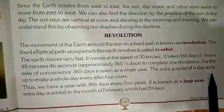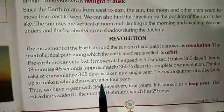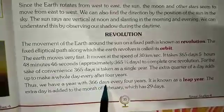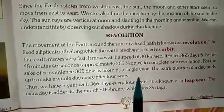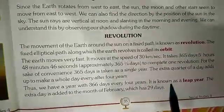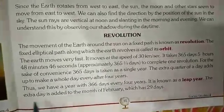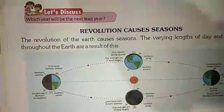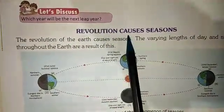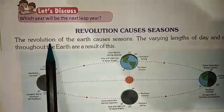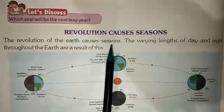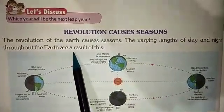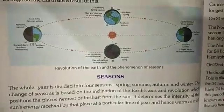The extra quarter of a day adds up to make a whole day every 4 years. Thus, we have a year with 366 days every 4 years, which is known as a leap year. The extra day is added to the month of February, which then has 29 days. Revolution of the earth causes seasons. The varying length of the day and night throughout the year are a result of these seasons.